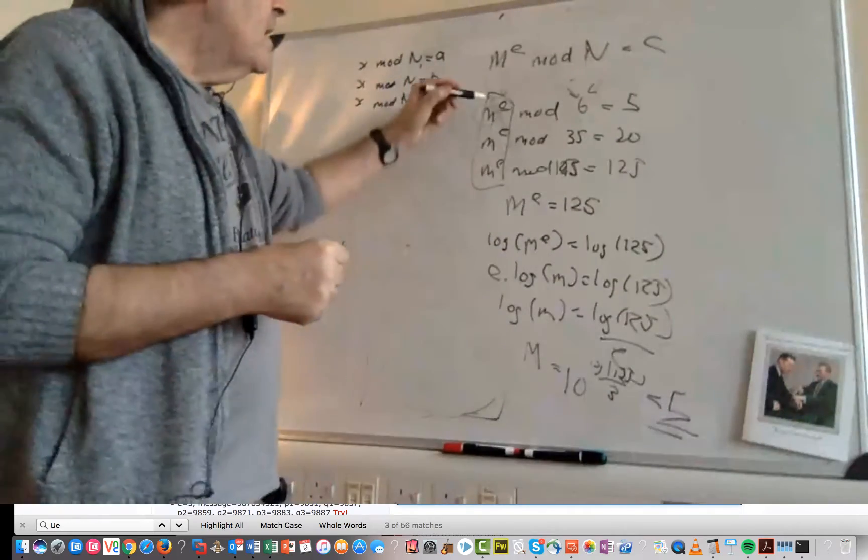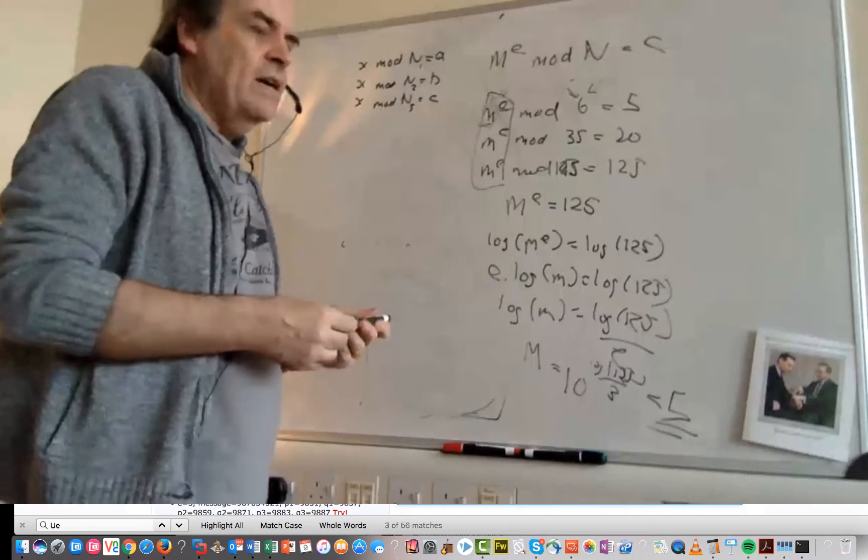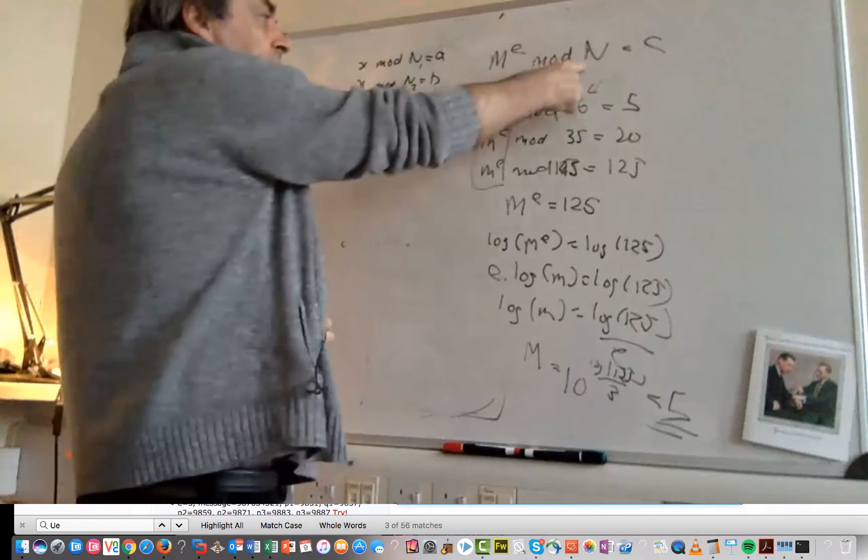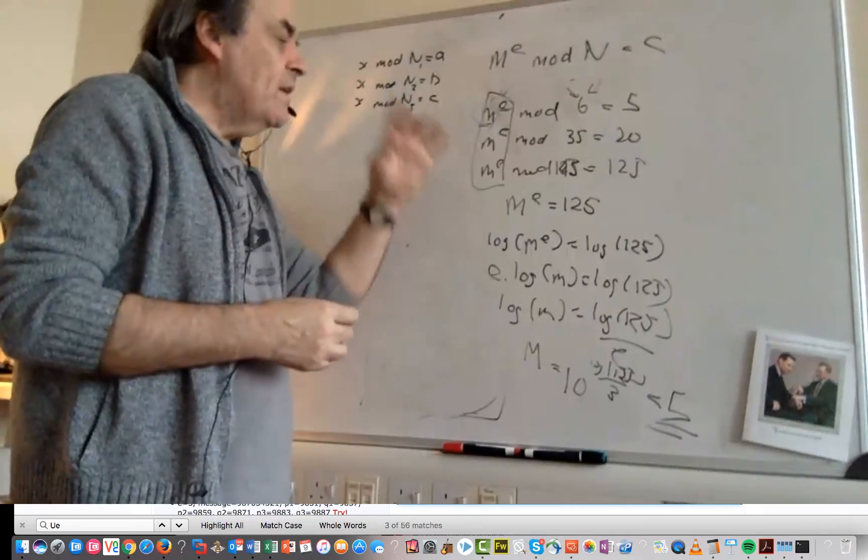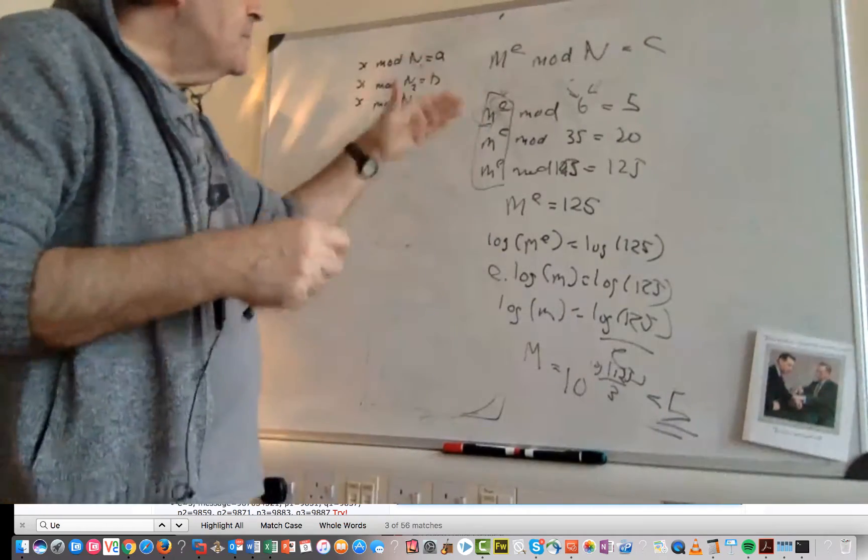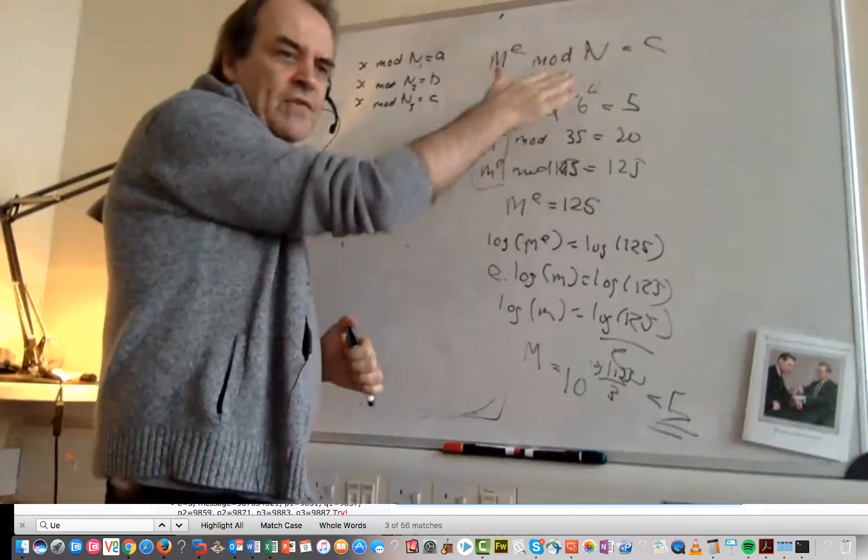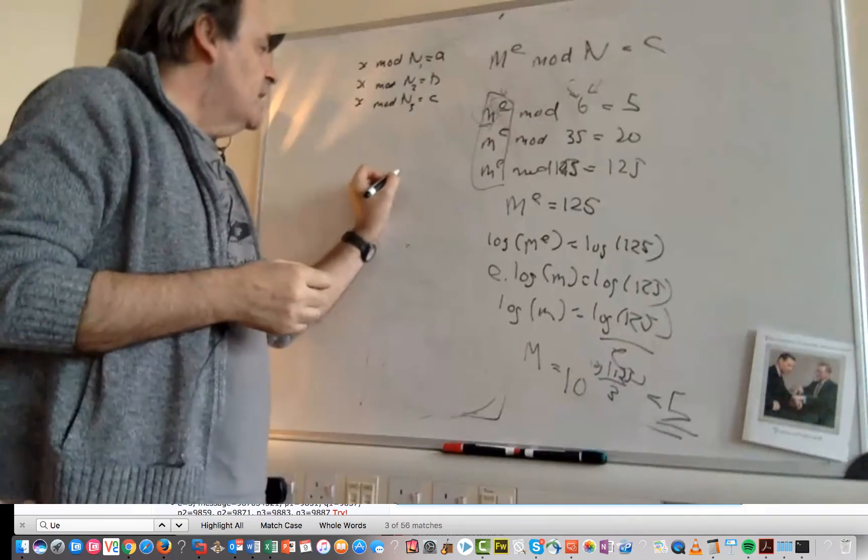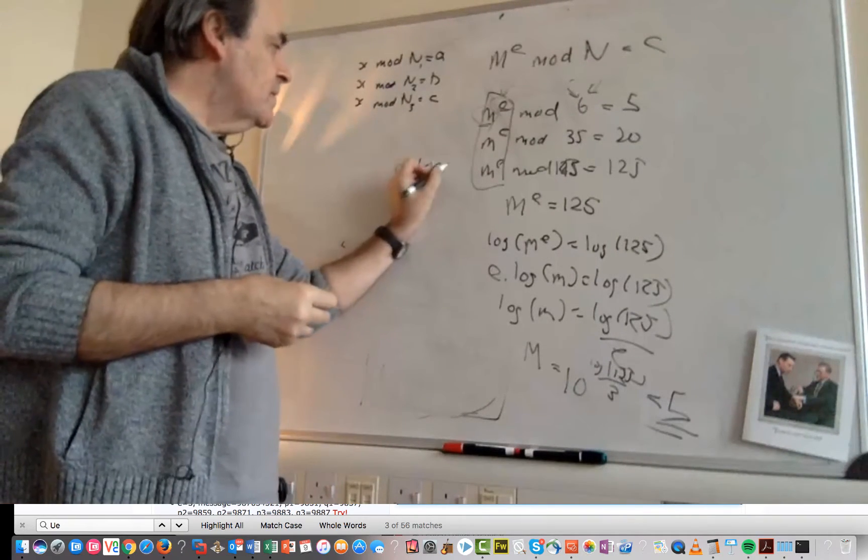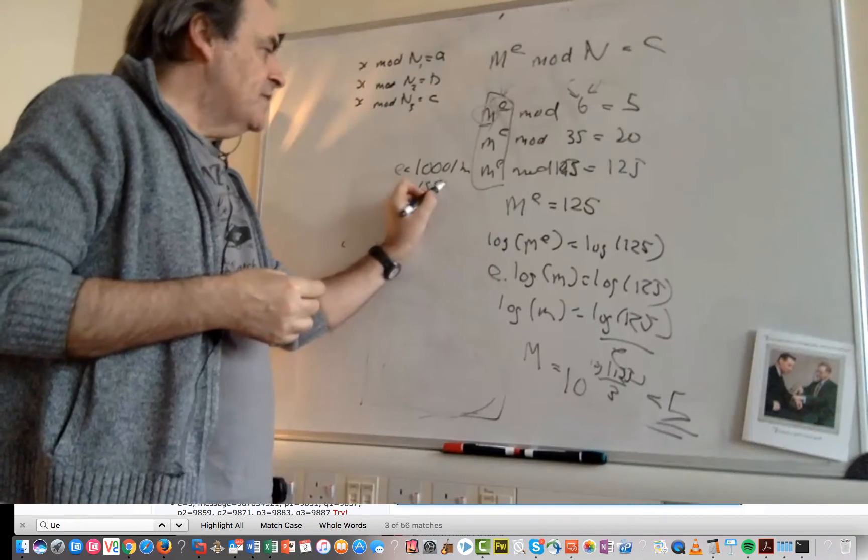So in this way, we can actually crack the message without actually knowing the private keys and without having to decrypt. So purely from the encryption process, we've got three keys that have been created. It could be three different sessions. Because what normally happens is that E is 1,0,0,0,1 in hex, which is 65,537.